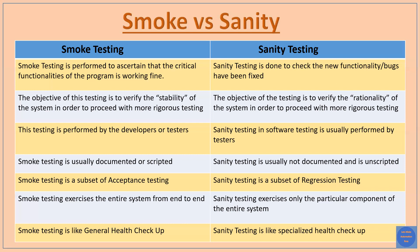Smoke testing is a subset of acceptance testing, while sanity testing is a subset of regression testing. Smoke testing exercises the entire system from end to end, whereas sanity testing exercises only particular components of the entire system. The best example to understand the difference: smoke testing is like a general health checkup, and sanity testing is like a specialized health checkup.